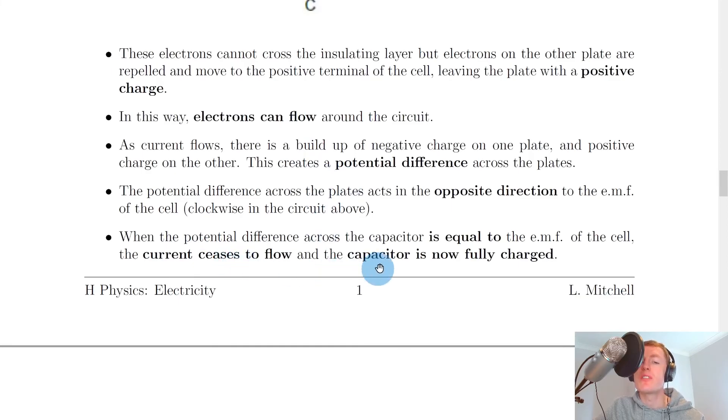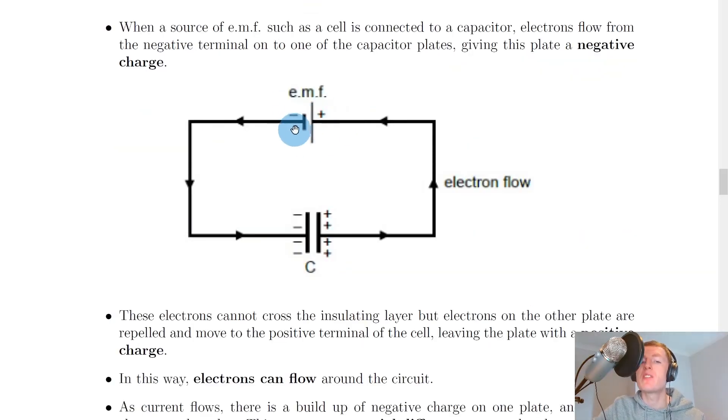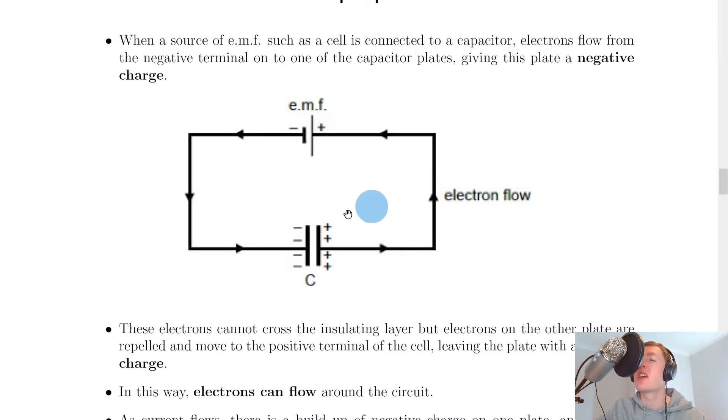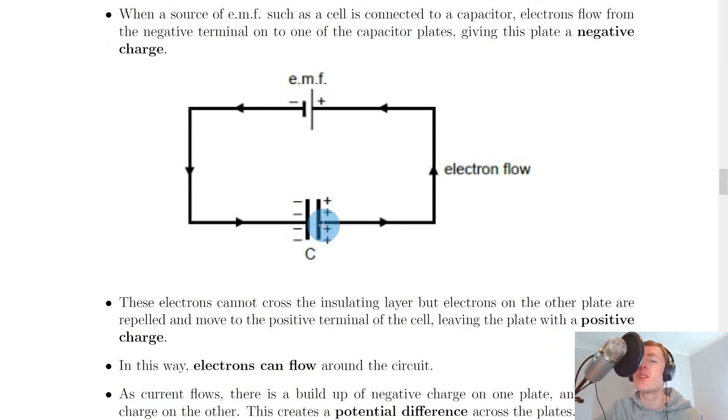Lastly, when the potential difference across the capacitor is equal to the EMF of the cell, the current ceases to flow and the capacitor is now fully charged. Let's say we have a 10 volt battery; when the potential difference across the capacitor increases to 10 volts, the current will stop flowing in the circuit, and we say the capacitor is now fully charged. The capacitor will be fully charged when the potential difference across it is equal to the potential difference of the supply.